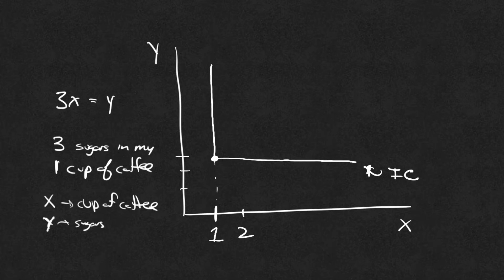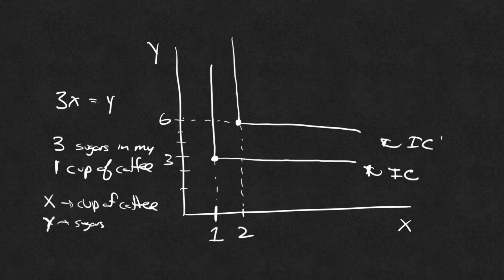What if I have a second cup of coffee? Well, if I have a second cup of coffee, I need not only three, I need four, five, six. I need six of these spoons of sugar. So now I see my indifference curve looking right here. This is my new indifference curve. Let's call this indifference curve prime.